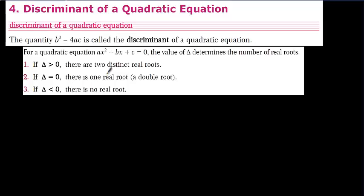In this video, we are going to analyze the discriminant of a quadratic equation. We said that delta is equal to b squared minus 4ac, and this is the discriminant of the quadratic equation.